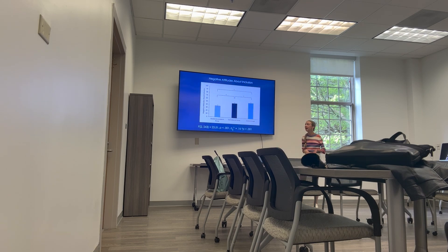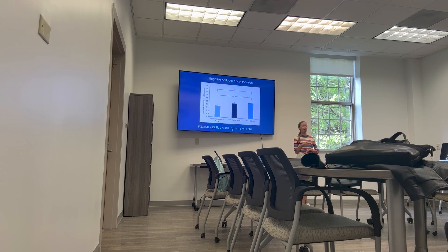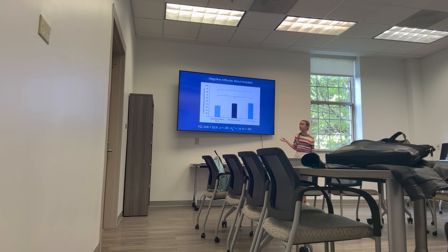Finally, I conducted a between-subjects ANOVA to look at negative attitudes about inclusion by group — this is the inclusion subscale of the Attitudes Toward Disability Scale. There was a significant main effect for group with a large effect size, and there were significant differences between all groups for negative attitudes about inclusion.